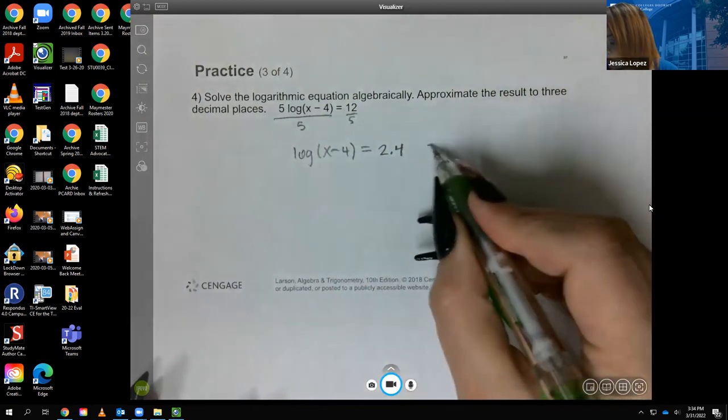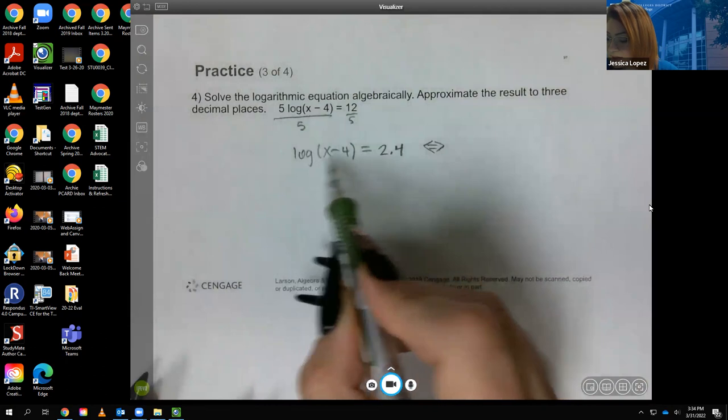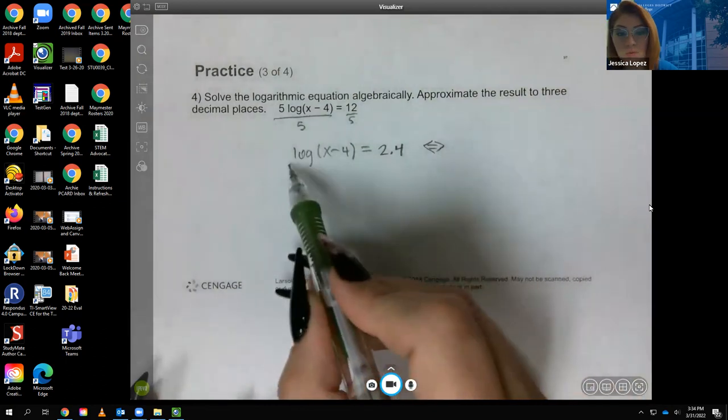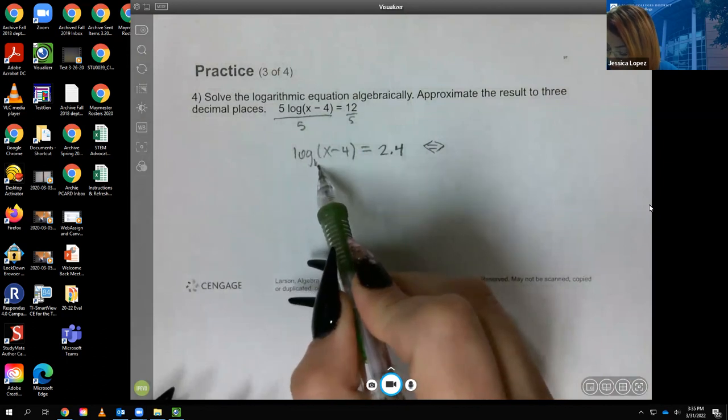Then I need to change the form over, but because this does not have a base, I need to know what the base is going to be. Remember, when it's just log, it's the common log, and the common log has a base 10.